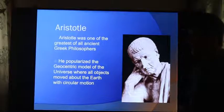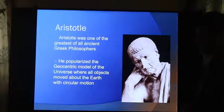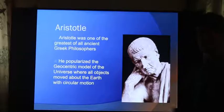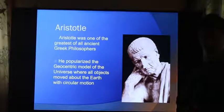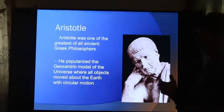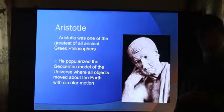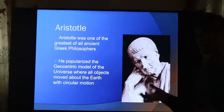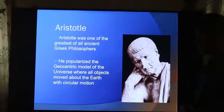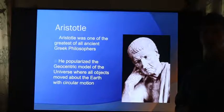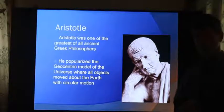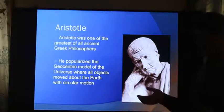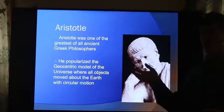Going to the ancient Greeks, Aristotle was probably one of the greatest of the natural philosophers of the time, and he popularized the geocentric model of the universe where all objects moved about the earth with circular motion. He had a very good reason for supporting this. Aristotle knew that if the earth were in motion around the sun, any distant object should tend to shift its appearance due to an effect we call parallax. He never observed these in the stars, and the stars were thought to be the most distant objects, which we now know they are. Without the parallax, Aristotle could not support the idea that the earth moved, so he reasoned that the earth was stationary and everything went around it. Not the correct model, but really the wrong model for the right reasons.